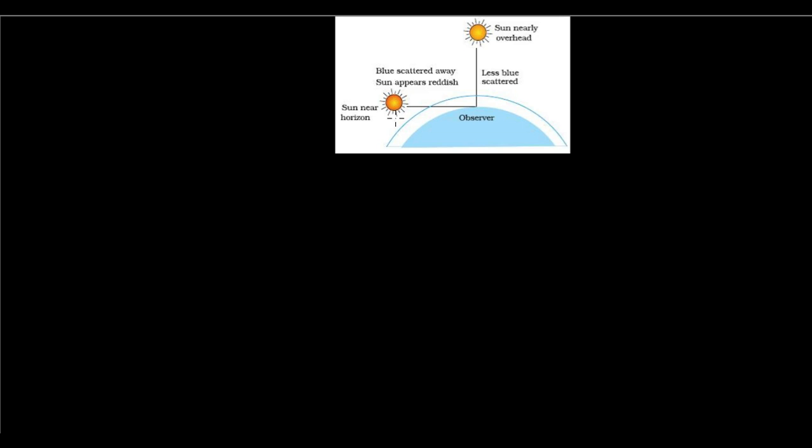Now we come to the last topic of this chapter: the color of the Sun. There are two different cases. One is when the sun is at the horizon — just about to rise or set, during sunrise or sunset — where the sun appears reddish. And at noontime, the sun appears almost white.